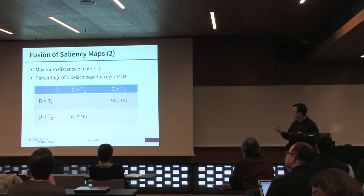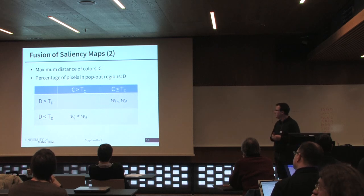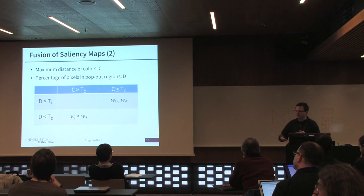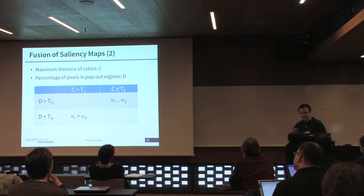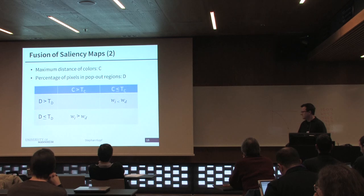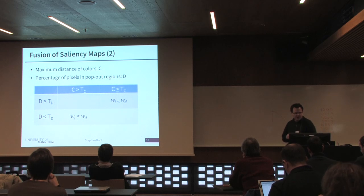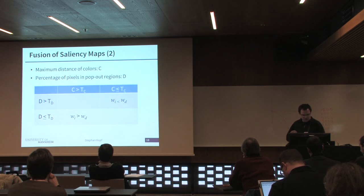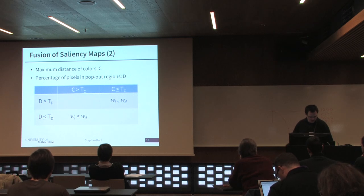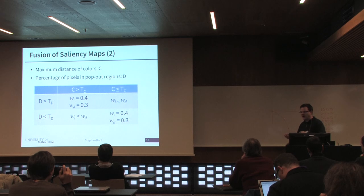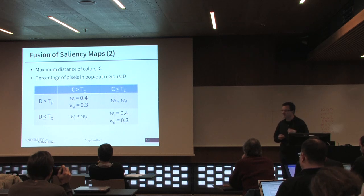We define some thresholds: if we have a very high color difference, and a second threshold for the percentage of pixels in pop-out regions — if this percentage is low, then we emphasize the importance of image saliency and use larger weights. The opposite is also true: if there's no relevant color contrast in the frame but a very strong depth information, we mostly use the depth information. In all other cases where both values are high or both are low, we use some fixed weights, slightly favoring image saliency because it is a bit more robust.